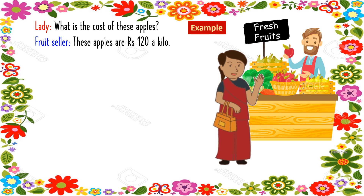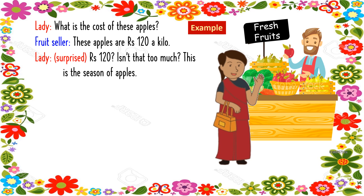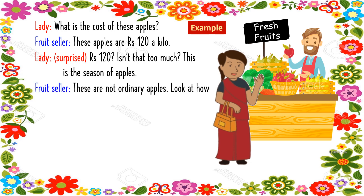Fruit seller: These apples are rupees 120 a kilo. Lady, surprised: Rupees 120? Isn't that too much? This is the season of apples. Fruit seller: These are not ordinary apples. Look at how red and juicy they are.